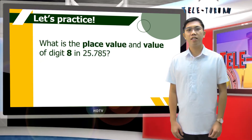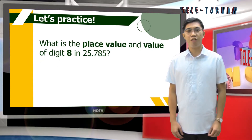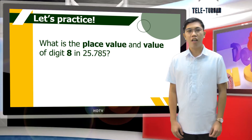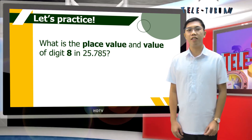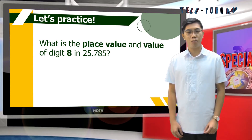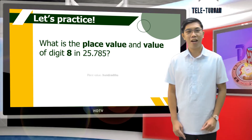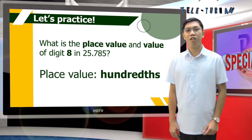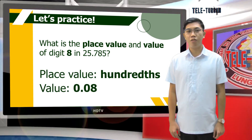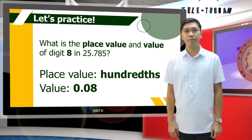What is the place value and value of digit 8 in 25 and 785 thousandths? The place value is hundredths, while the value is eight hundredths.